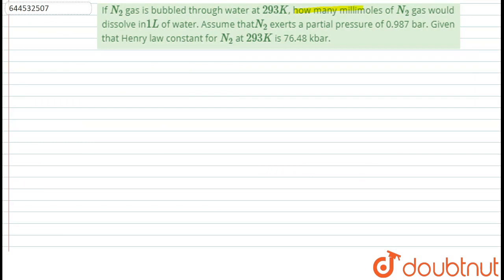In the question, if N2 gas is bubbled through water at 293 Kelvin, how many millimoles of N2 is dissolved in 1 litre of water if its partial pressure is 0.987 bar? Given that Henry's law constant is 76.48 kilobar.